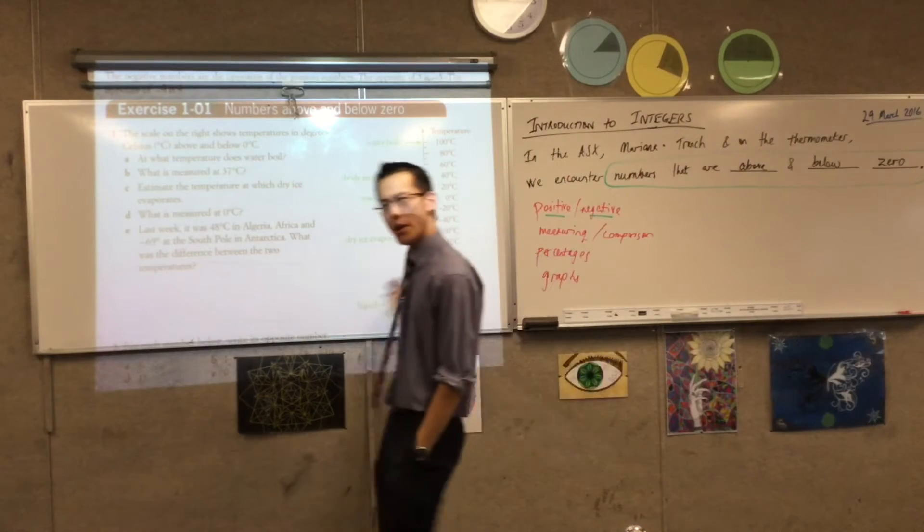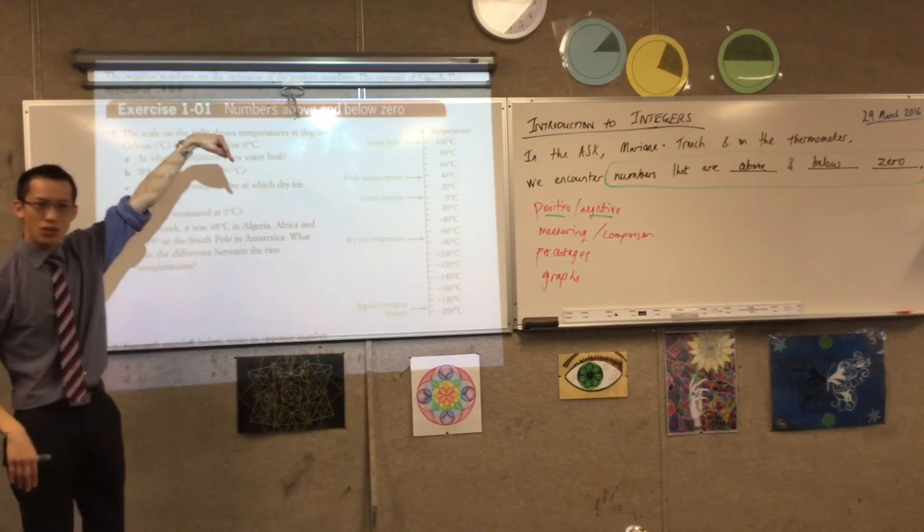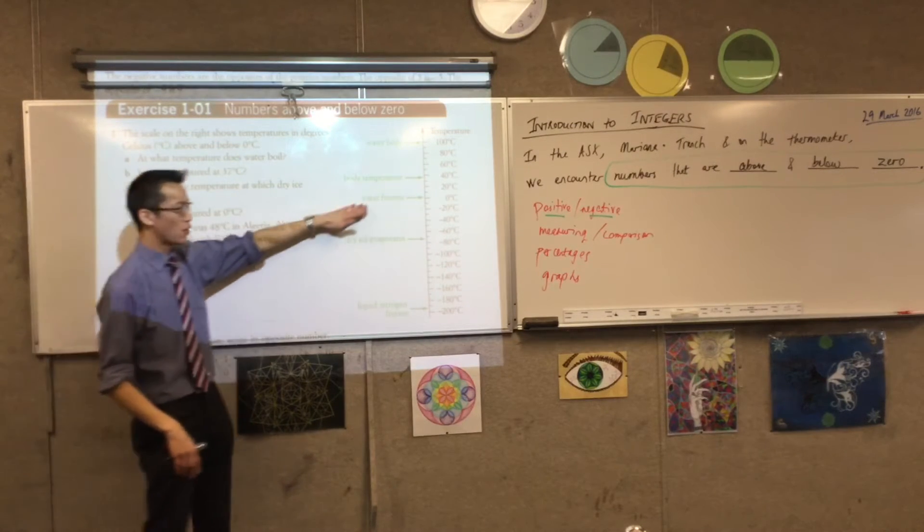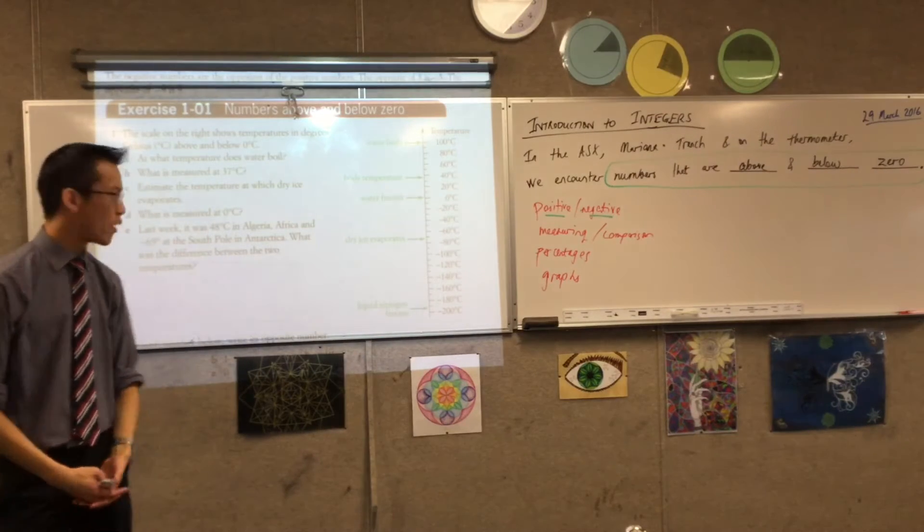A thermometer is a perfect example, where you've got numbers that go up, it's like it's getting hotter and hotter. And you've got numbers that go down as well, it's getting colder and colder. This is the Celsius scale, right, that we're very familiar with.